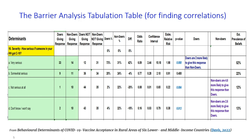Barrier analysis has been used in 59 countries for a host of different behaviors — health, nutrition, and WASH — but more recently also child protection, livelihoods, education, mining app operations, and even the use of trash cans in Baltimore City. So it can be used for a wide variety of behaviors, including immunization. The training manual is available in English, Spanish, French, and Arabic, and the most recent version is part of the Designing for Behavior Change manual and also in A Practical Guide to Barrier Analysis by Bonnie Kittle.